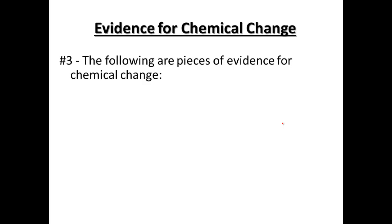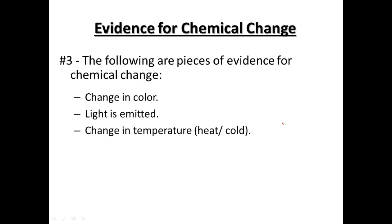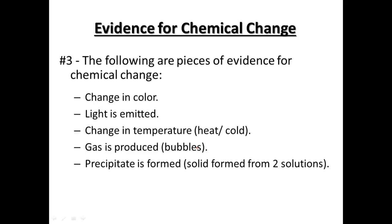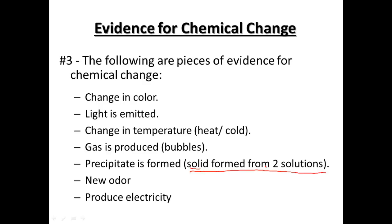Evidence that a chemical change has occurred: if the substance changes in color; if light is emitted or produced; if it changes temperature — gets hotter or colder; if gas is produced, meaning if it bubbles; if a precipitate is formed — make sure to note that a solid is formed from two solutions, so like two clear solutions mixed together forming a solid. A new odor — it has to smell different than before; if you bake a cake, it smells different afterwards. Also, if it produces electricity, like a battery, that's another example of a chemical change.